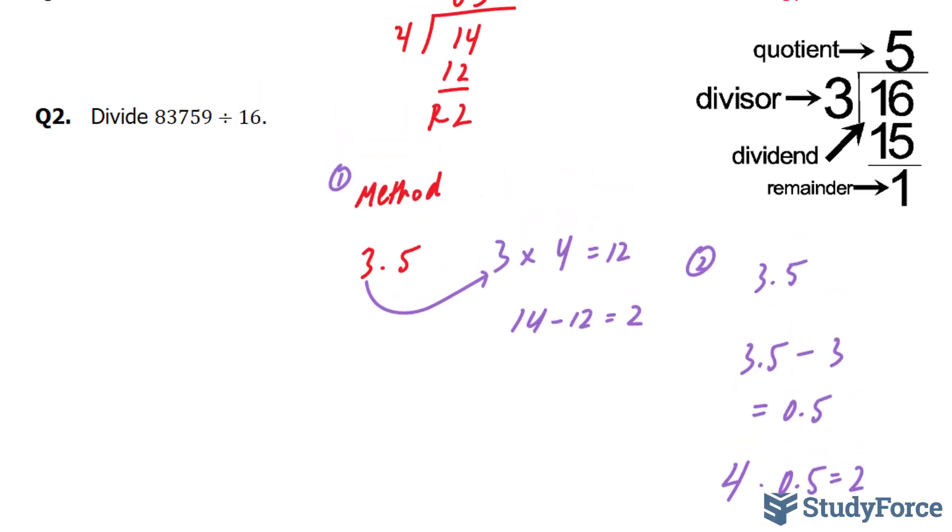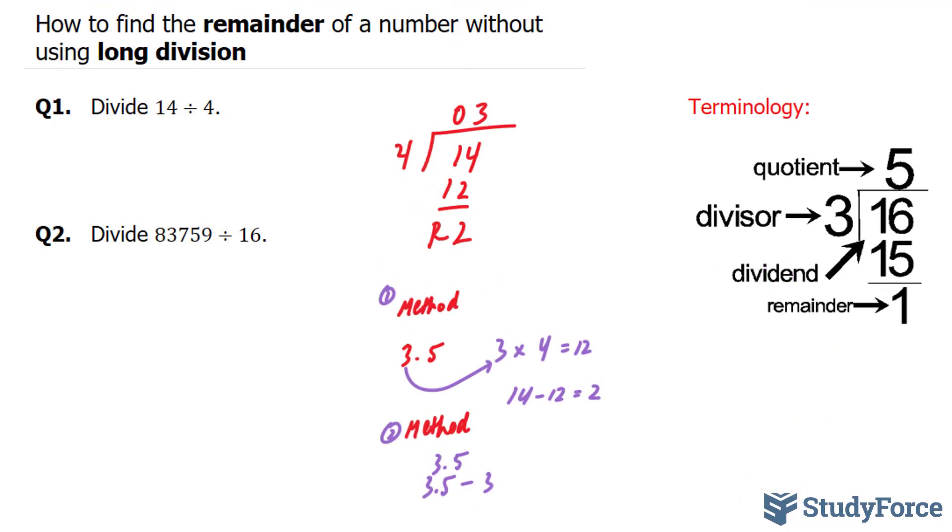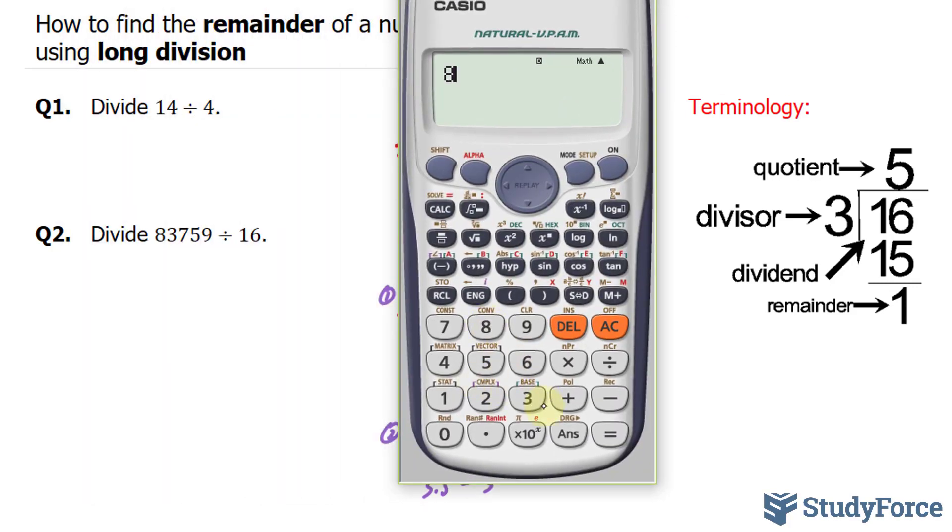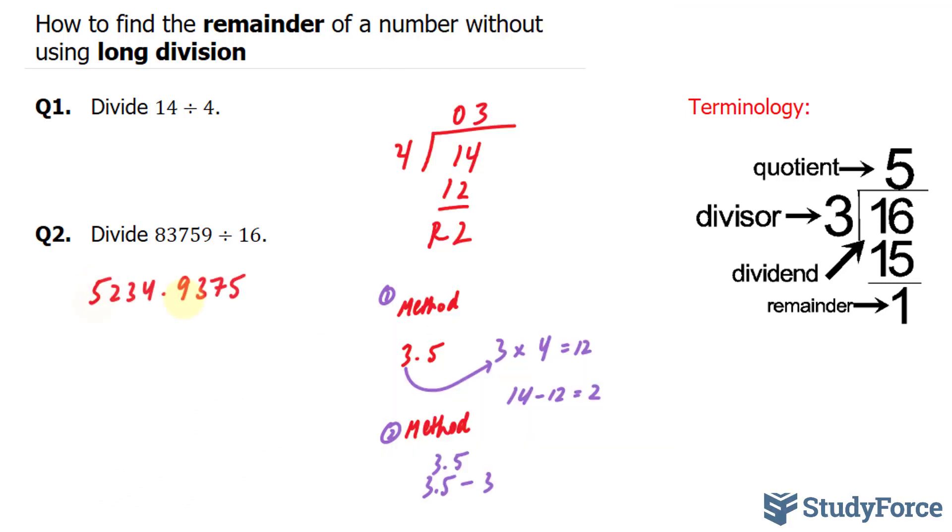Now let's go ahead and use this method for question 2. In question 2, they ask us, divide 83,759 by 16. I'm going to use your calculator. 83,759 divided by 16. This gives us the following, 5,234 decimal 9375.